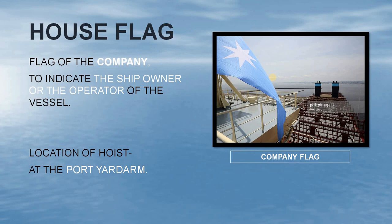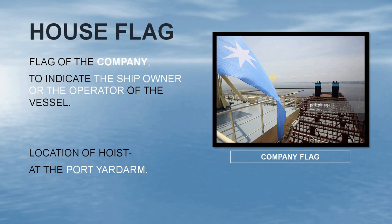Next up we have the house flag. It is the flag of the company, used to indicate the ship owner or the operator of the vessel. Its location of hoist is at the port yard. You can see the funnel here at the aft part of the ship — on the port side, you can see the company flag being hoisted.